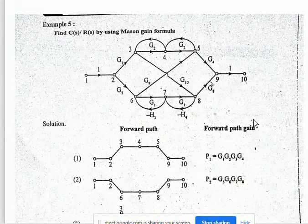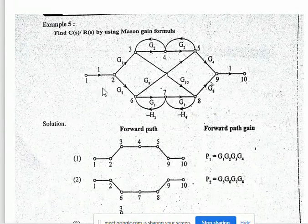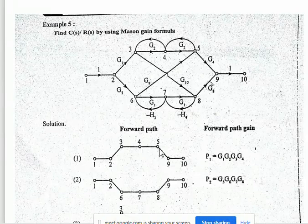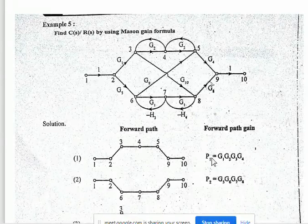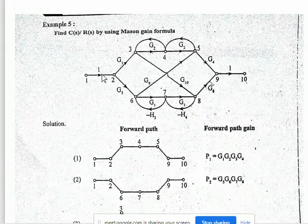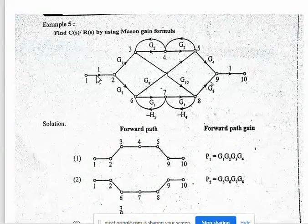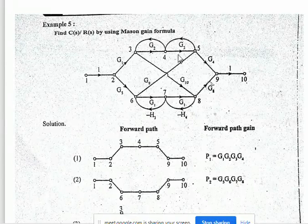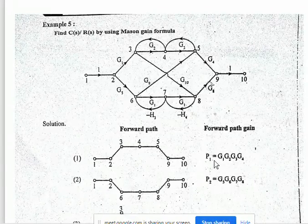The first step is to write the forward paths. As discussed, the first forward path is 1 to 2, 2 to 3, 3 to 4, 4 to 5, 5 to 9, 9 to 10. This is represented as P1. The forward path gain P1 is equal to G1 × G2 × G3 × G4.